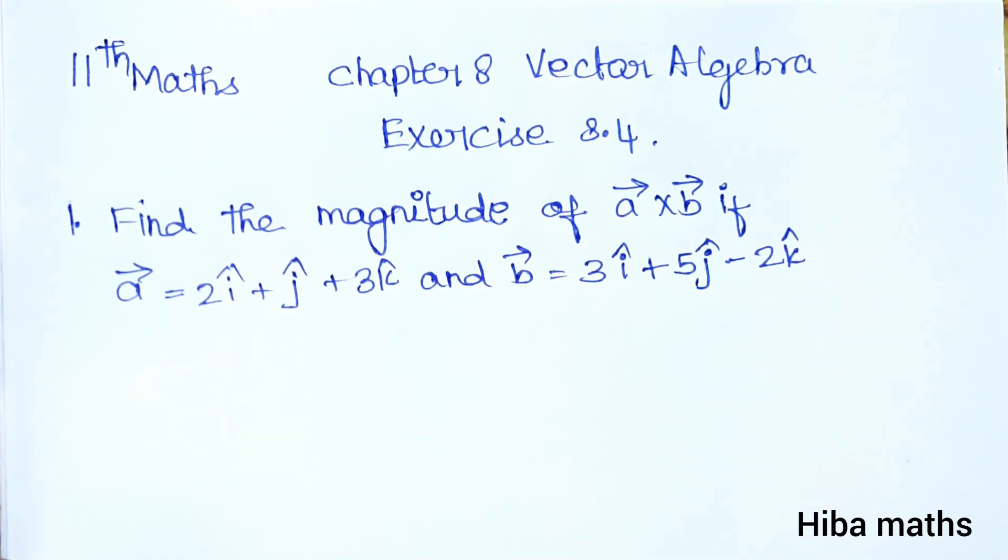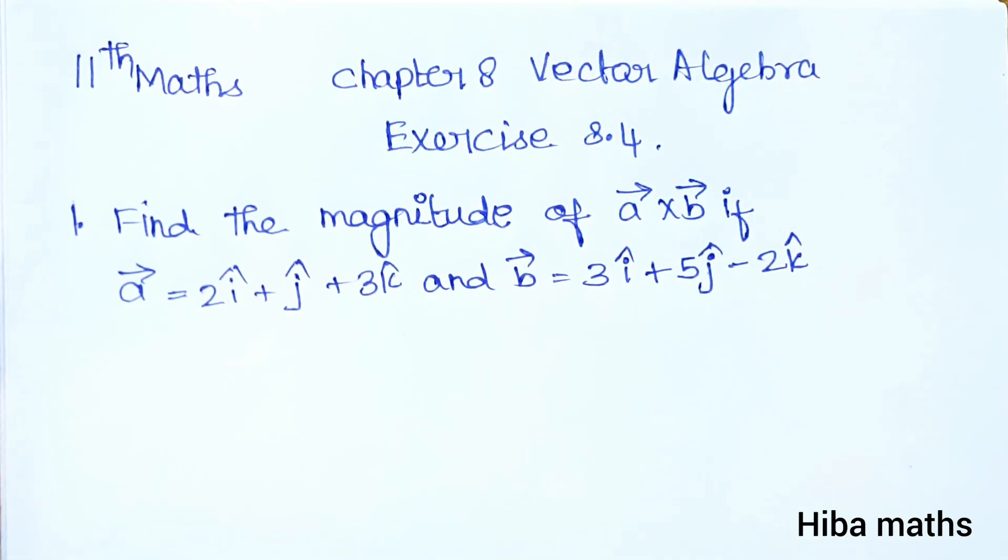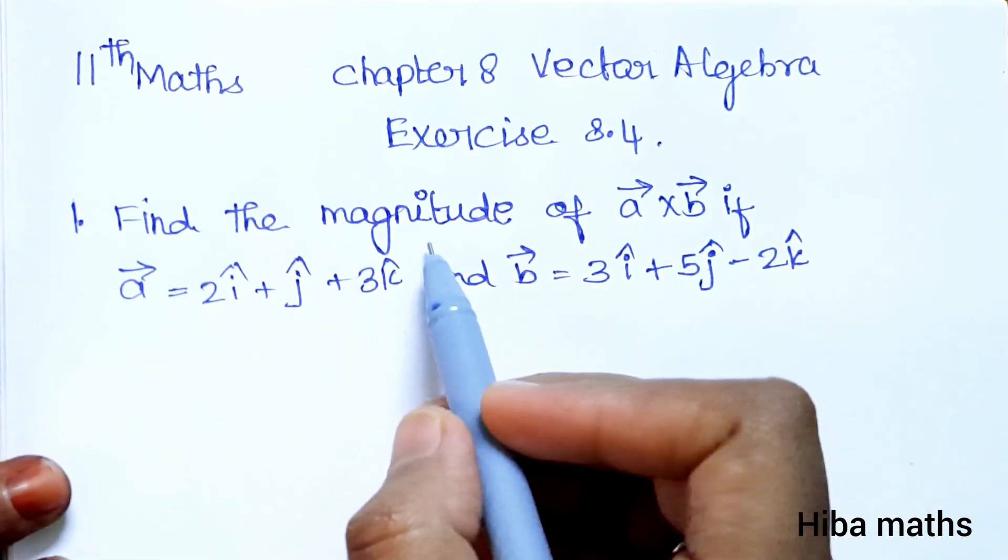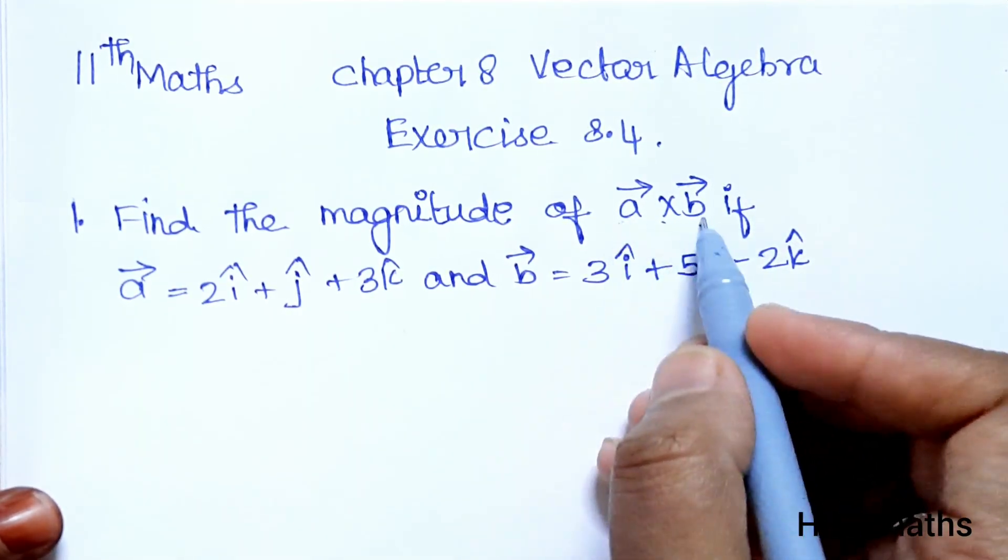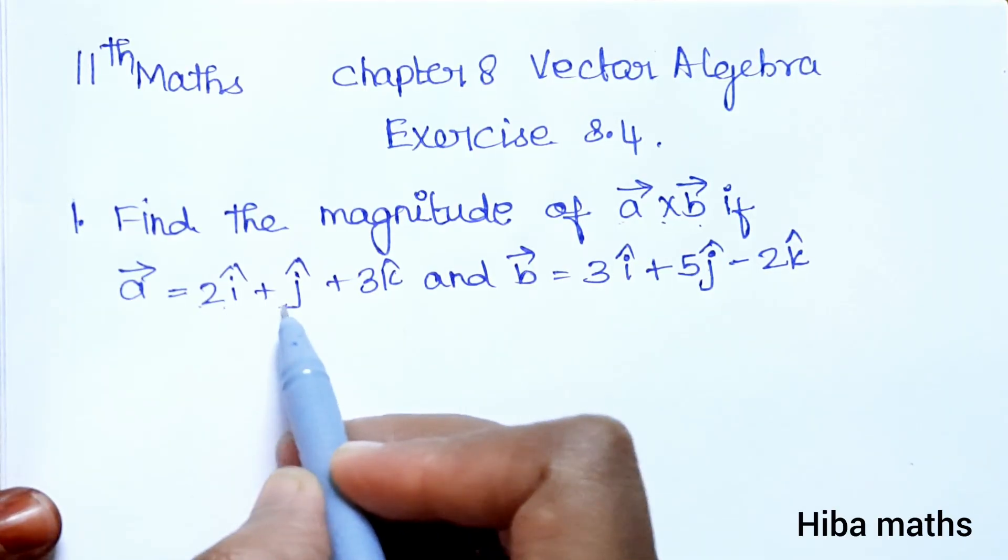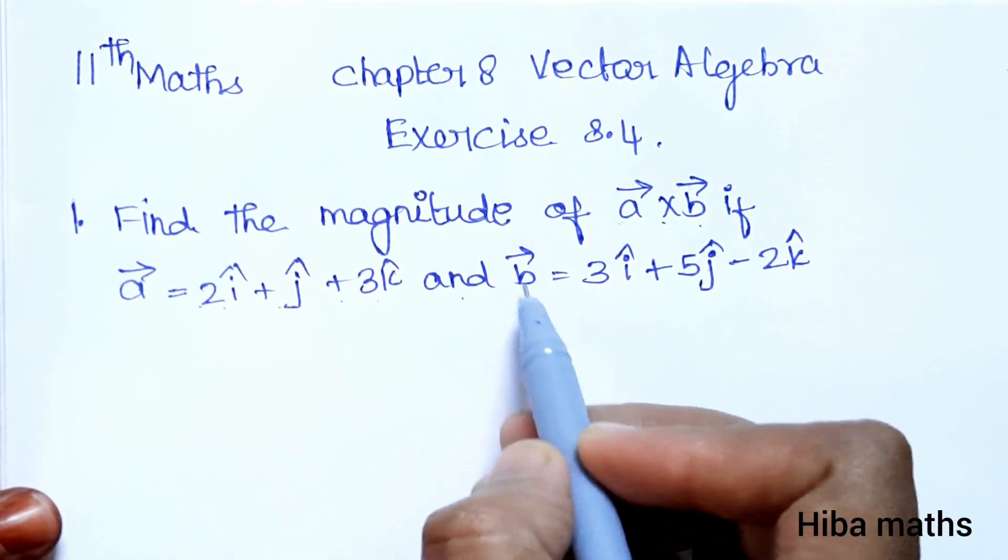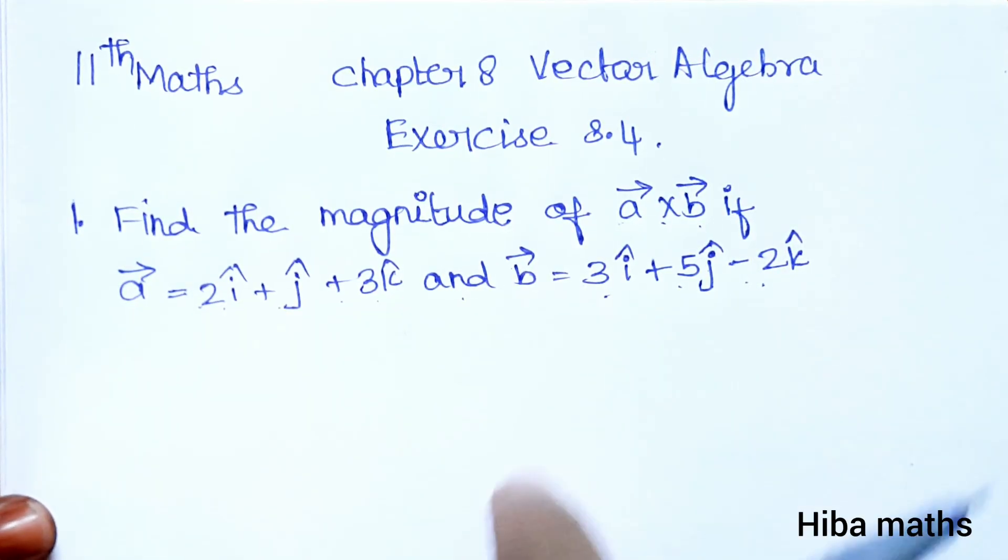Hello students, welcome to Hiba Maths. 11th standard maths, chapter 8 Vector Algebra, exercise 8.4, first question. Find the magnitude of vector A cross vector B if A vector is equal to 2i plus j plus 3k and B vector is equal to 3i plus 5j minus 2k.